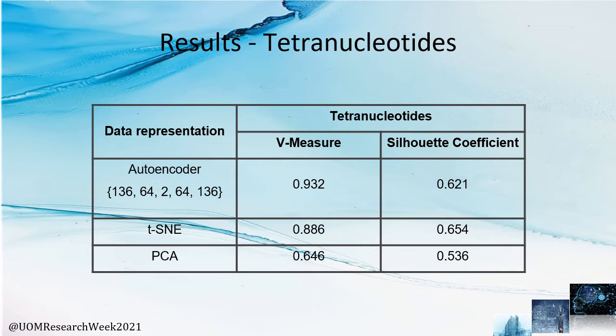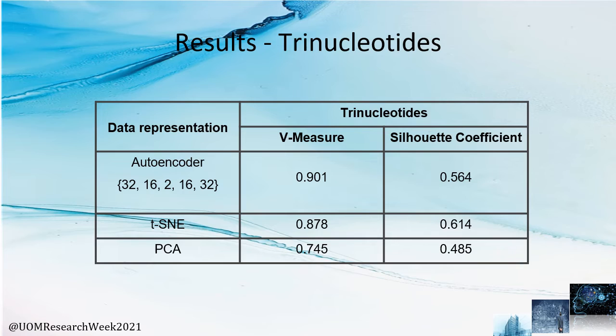Here are the results we obtained. As you can see, autoencoders performed better than T-SNE and PCA on the V-measure front, while the silhouette coefficient was comparable. For trinucleotides, autoencoders performed vastly better than both T-SNE and PCA.